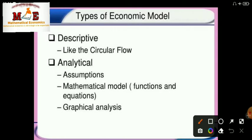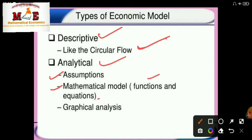Now, what are the types of economic models? Generally there are two types: one is called the descriptive model and the other is called the analytical model. In the descriptive model, the circular flow of national income is an example. The analytical model consists of assumptions, mathematical models like functions and equations, and mostly graphical analysis.